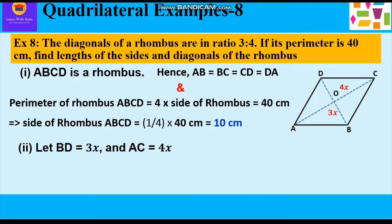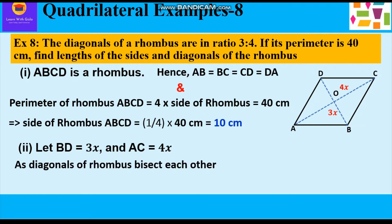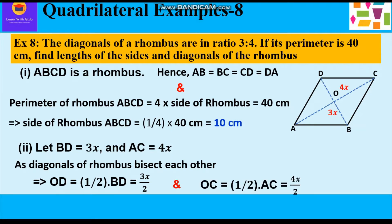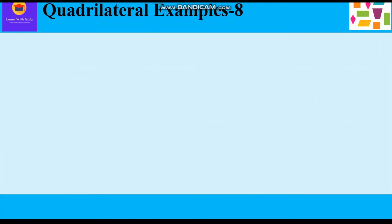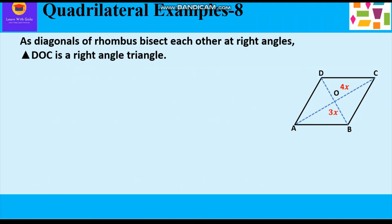Since the ratio is 3:4, let BD = 3x and AC = 4x. As the diagonals of a rhombus bisect each other — dividing into two equal halves — OD = BD/2 = 3x/2, and OC = AC/2 = 4x/2. The diagonals of the rhombus also bisect each other at right angles, meaning they are perpendicular to each other.